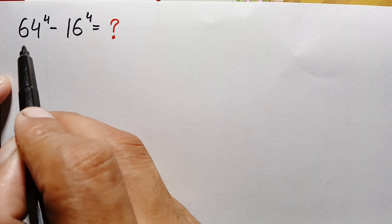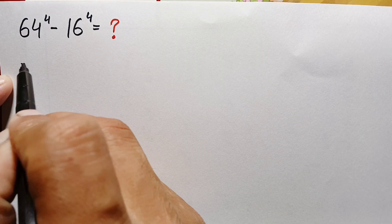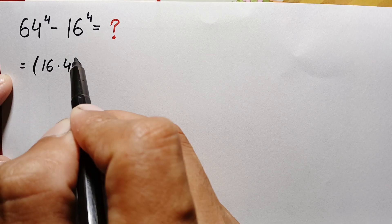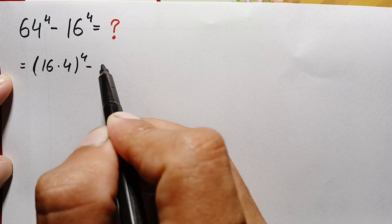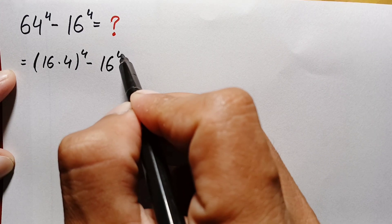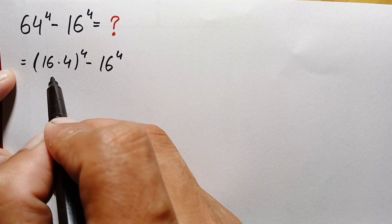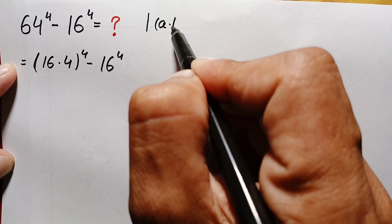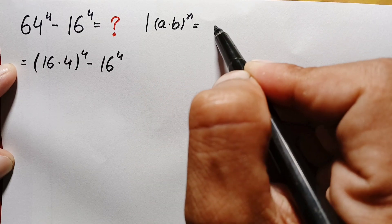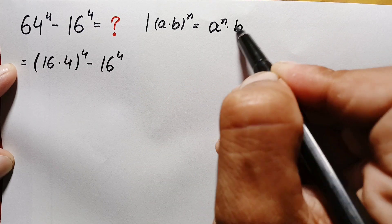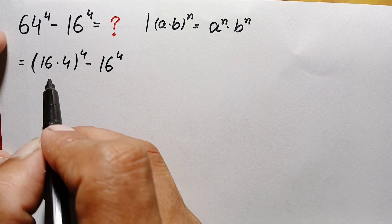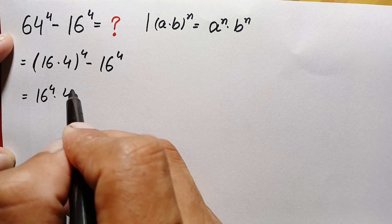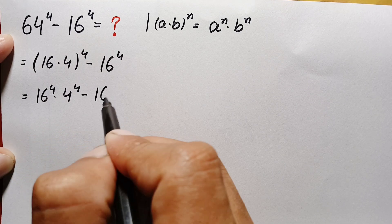First of all, we can write 64 as 16 times 4, raised to the power 4, minus 16 raised to the power 4. Now in the first term we will use an exponential identity: (a × b) raised to power n can also be written as a raised to power n times b raised to power n. Using this identity, the first term becomes 16 raised to power 4 times 4 raised to power 4, minus 16 raised to power 4.